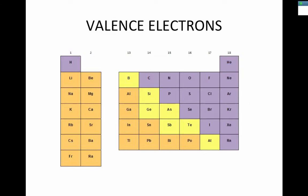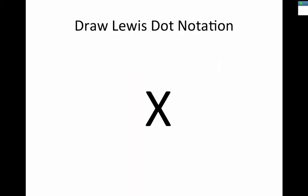Moving forward, drawing the Lewis dots around the element has a specific location. We have eight valence electrons that all elements want to get. Based on the number of valence electrons, we determine the number of dots. For instance, using element X as a generic element: if it has one valence electron, we put one dot in that location. If it had two valence electrons, like the alkaline earth metals, we'd have two dots.